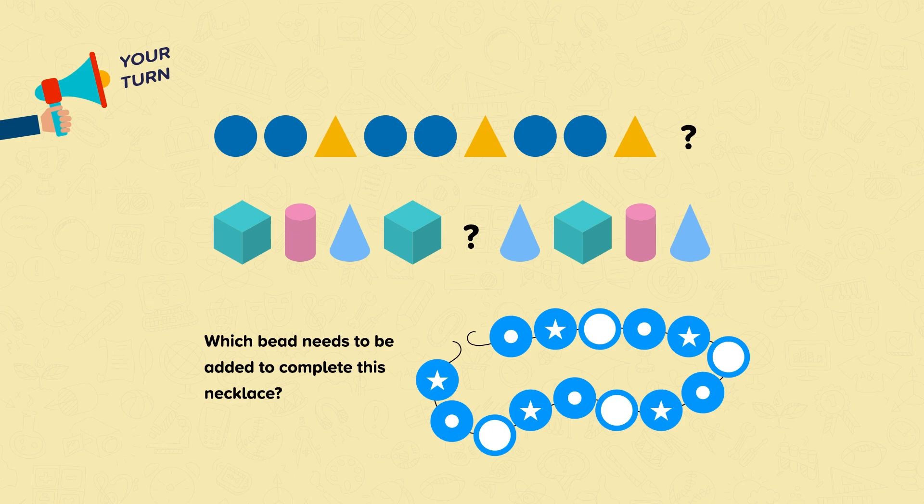Let's go through the answers now. Well done if you knew that a circle was missing from the first pattern and a cylinder was missing from the second pattern. For the third question you had to work out which bead needs to be added to complete the necklace. Well done if you knew that it was the bead with the big circle on it.